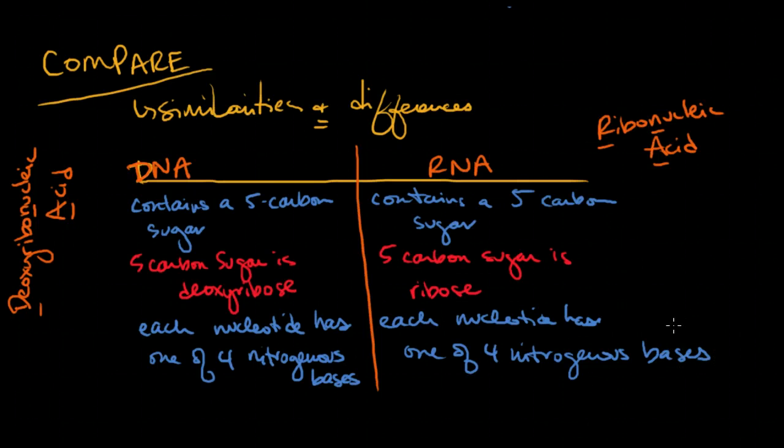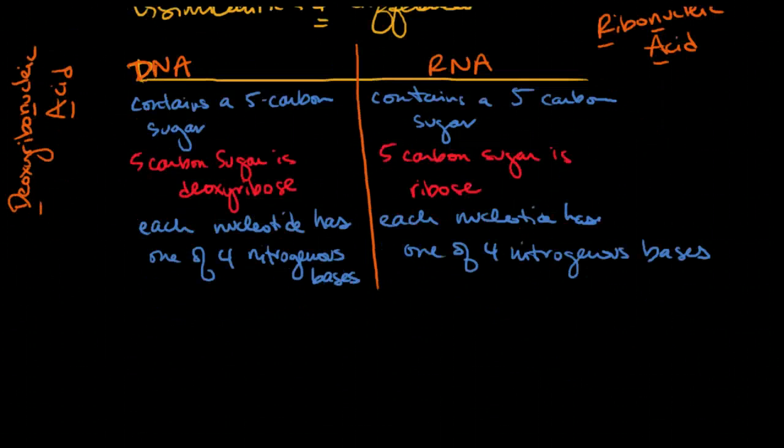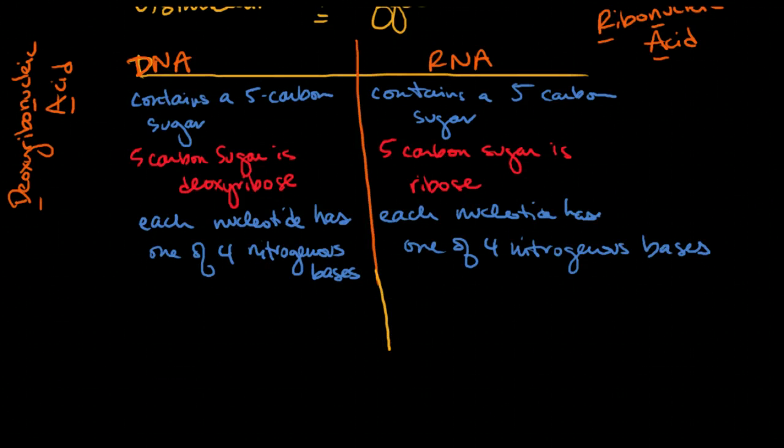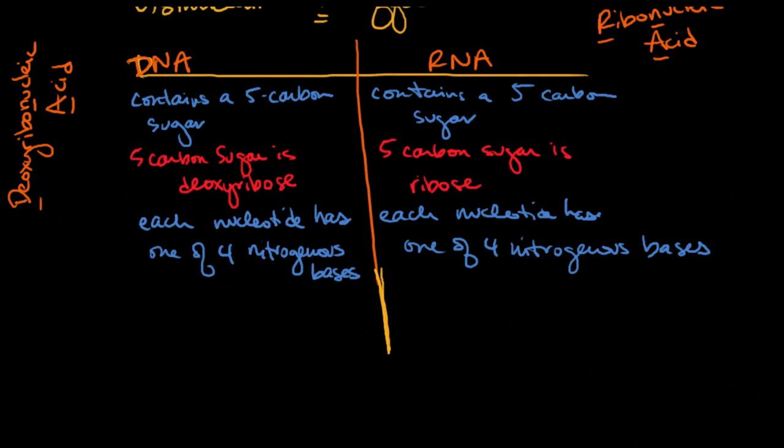And that's the same thing for RNA. Each nucleotide has one of four nitrogenous bases. And when we think about nitrogenous bases, I want you to think of A's, T's, C's, and G's. Whereas RNA's, we're not talking about T's, we're talking about U's.